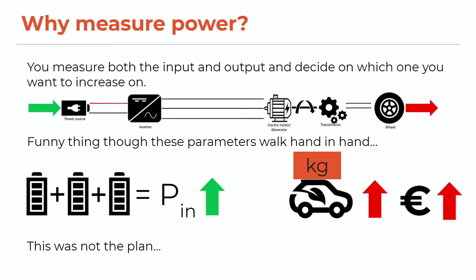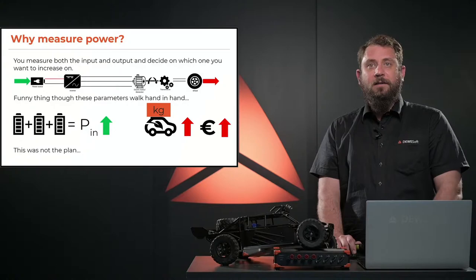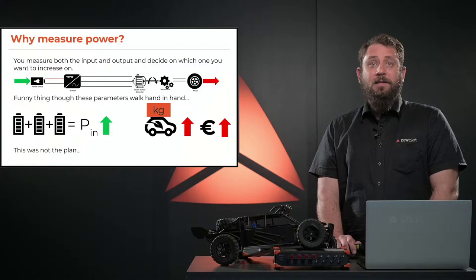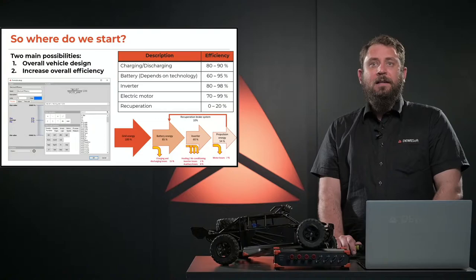For example, by just increasing the amount of energy fed into the system — for instance by adding more batteries — it has the adverse effect that more weight is added to the car. This will increase the amount of power available, but it will also increase the power-to-weight ratio, not really helping us much. It will also increase the cost of vehicle production, as the battery system is the most expensive part of the drivetrain. So where do we start? There are two main avenues we can take to increase the efficiency of an electric vehicle.